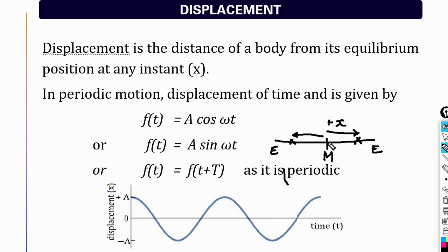Again, the starting point is the mean position only. But if displacement is measured in the opposite direction, it is represented as negative x, indicating that it is in a direction opposite to the previous direction.